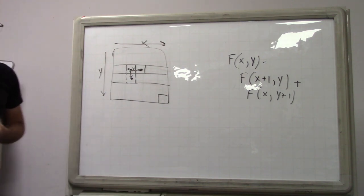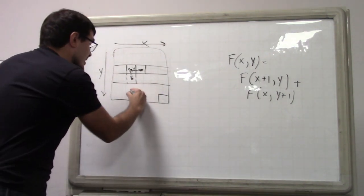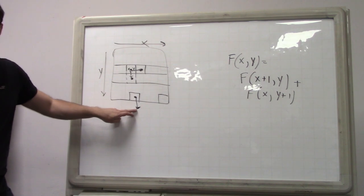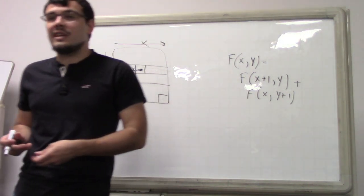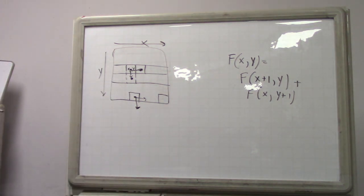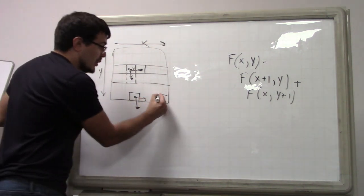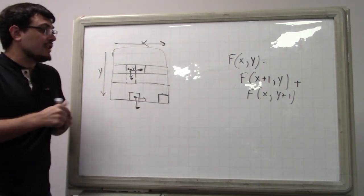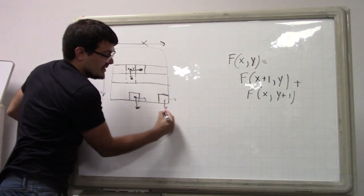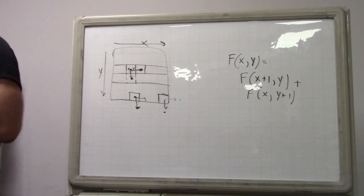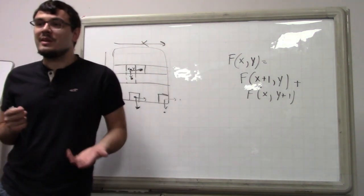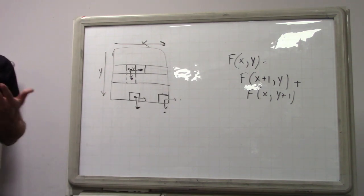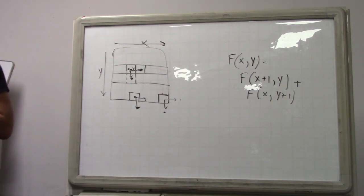What are the base cases? If you ever go out of bounds, that should count as 0 — there are zero paths going that way. You also need a base case for the end: if you're at the end, your answer is 1. If you forget that base case you'll get zeros everywhere, because at the end both neighbors are out of bounds and you'd get 0 plus 0. The number of ways to reach the end if you're already there must be 1 — there's always one way to do nothing.